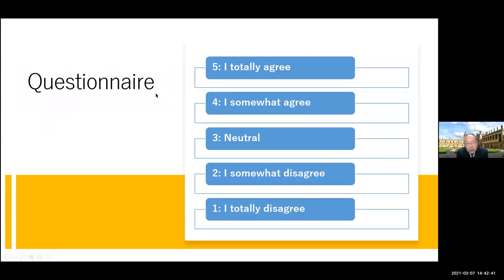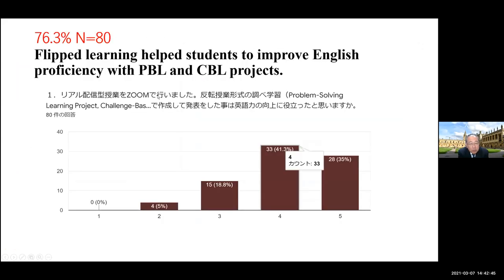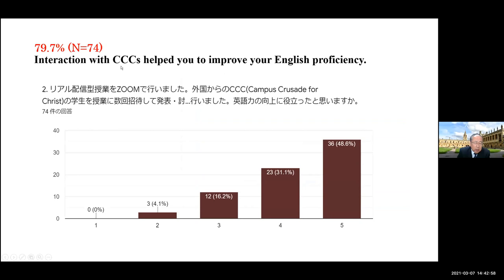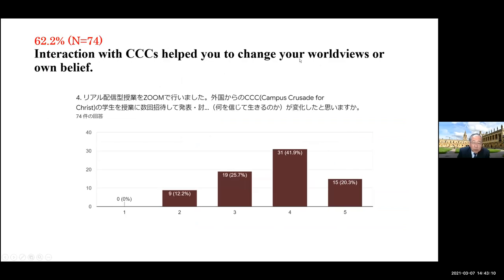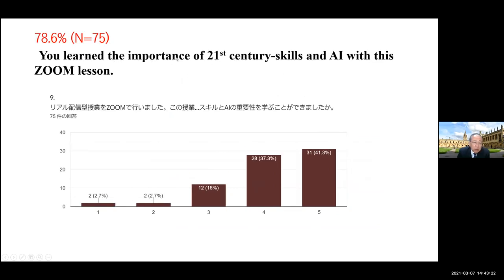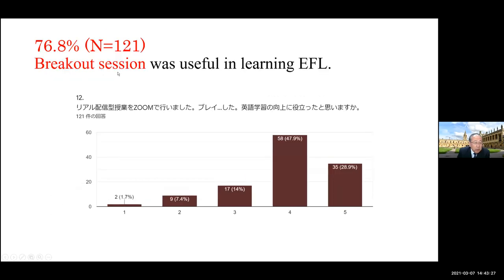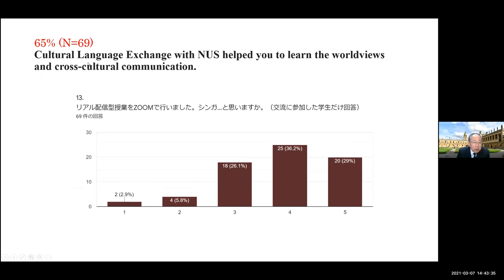Coming back to the questionnaire about COVID-19: flipped learning helps students improve English proficiency with PBL and CBL projects — about 76.3% among the 80-90 students. Interaction with CCS — Campus Crusade for Christ — helps improve English proficiency: 80%. Being more motivated to study English: 76.7%. Helping to change worldviews or own belief: about 62%. More or less, my students who interacted with CCS tended to be more open-minded. They also learned the importance of 21st century skills and AI with Zoom lessons. The breakout session was very useful in interaction for learning EFL, and cultural and language exchange like COIL helped students learn worldviews and cross-cultural communication.